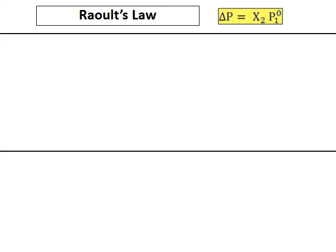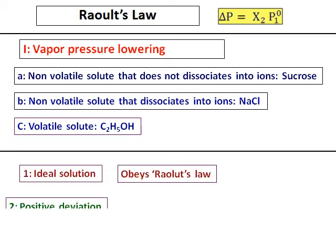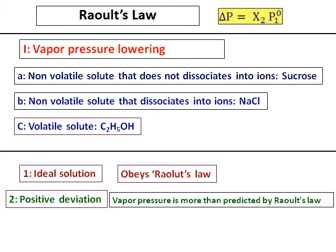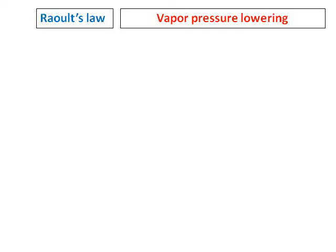We will do some basics on Raoult's Law. This video will cover vapor pressure lowering, solutions which obey Raoult's Law, the ideal solution, solutions which show positive deviation from Raoult's Law, and solutions which show negative deviation from Raoult's Law. Before going into the quantitative analysis, let us understand Raoult's Law and see what vapor pressure lowering is.